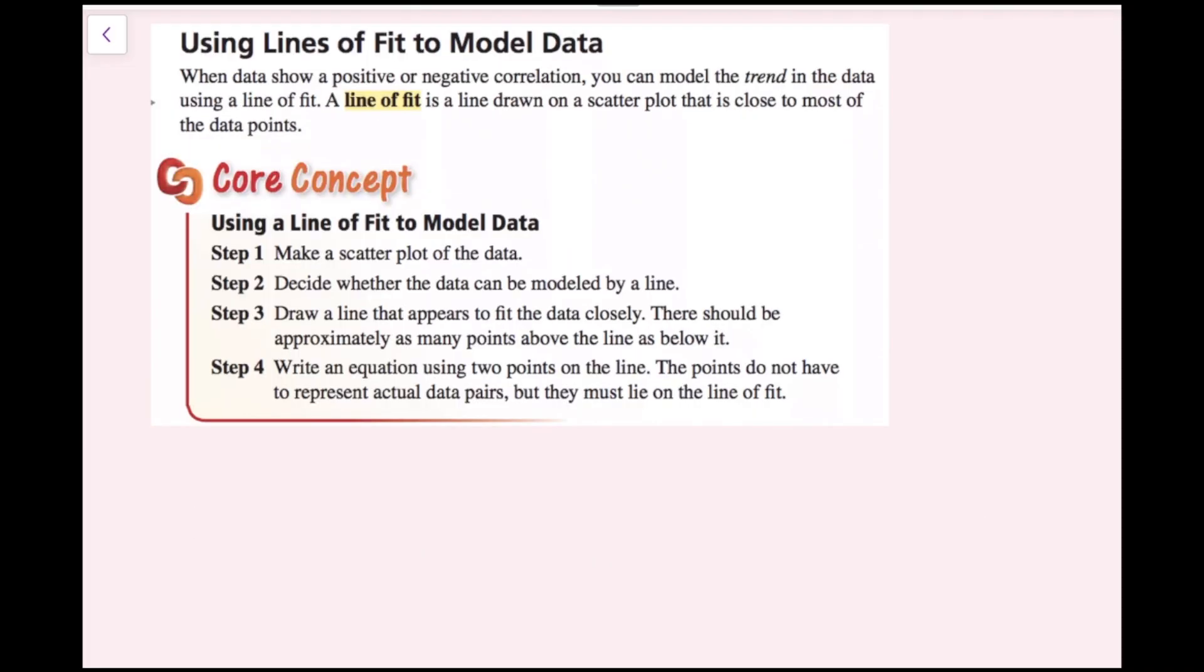Now we're going to talk about using lines of fit to model data. When data show a positive or negative correlation, you can model the trend in the data using a line of fit. A line of fit is a line drawn on a scatterplot that is close to most of the data points.